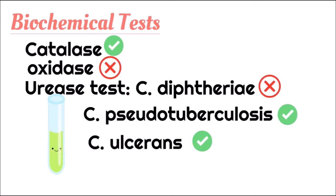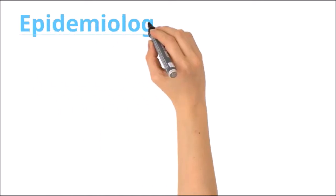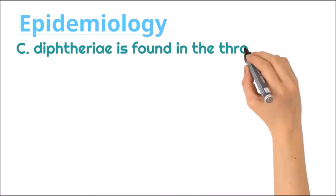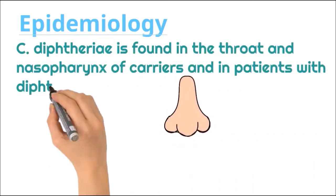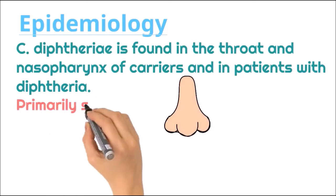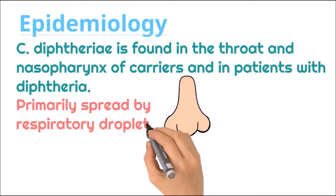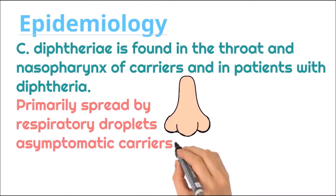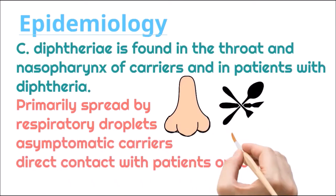Now let's discuss the epidemiology of diphtheria. Corynebacterium diphtheriae is found in the throat and nasopharynx of carriers and in patients with diphtheria. It is primarily spread by respiratory droplets, asymptomatic carriers, and by direct contact with diphtheria patients or fomites.